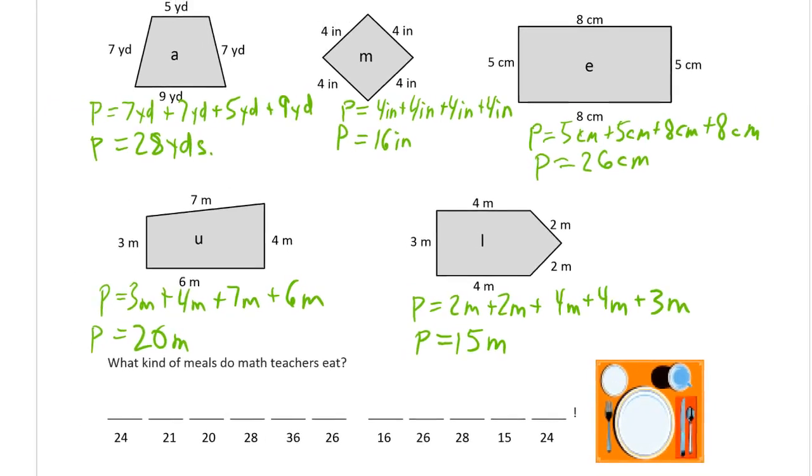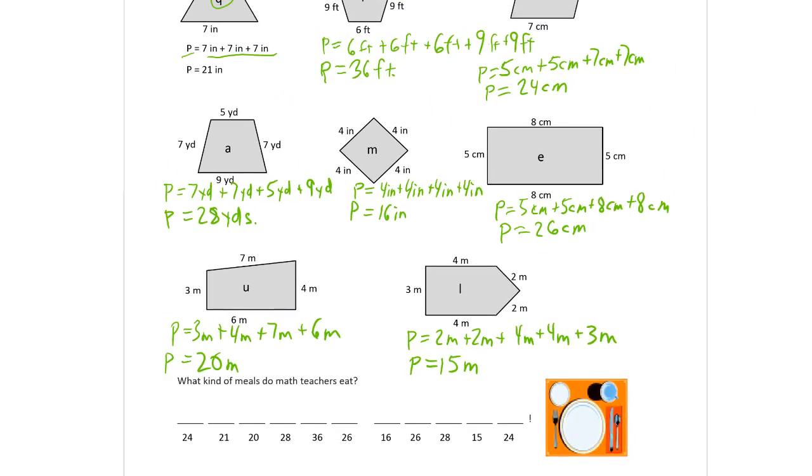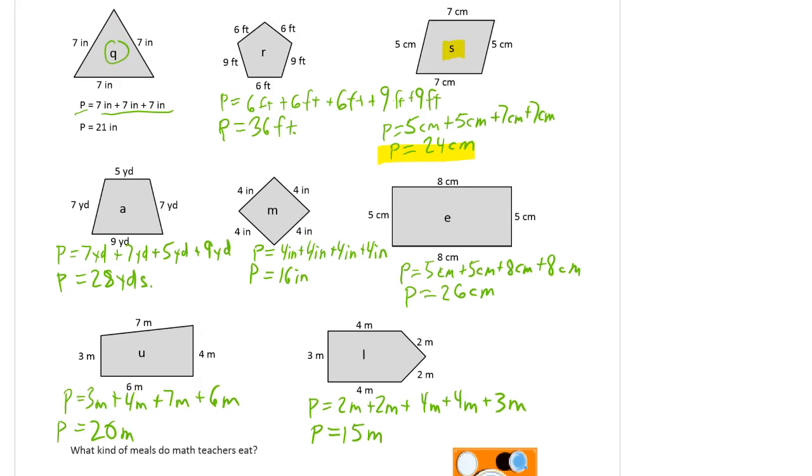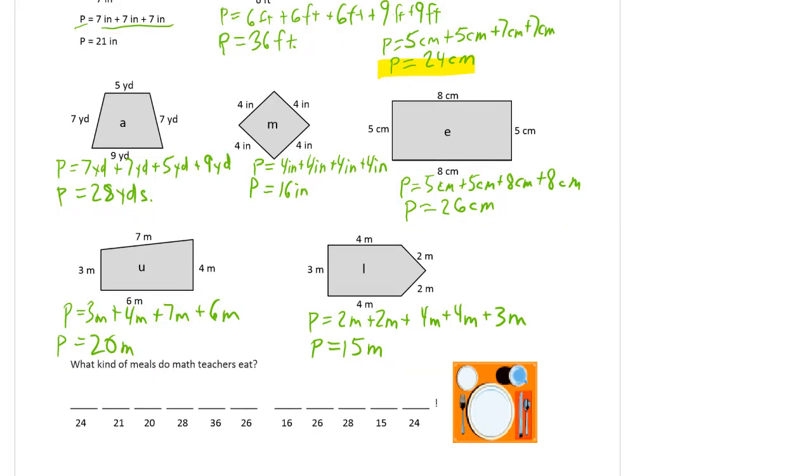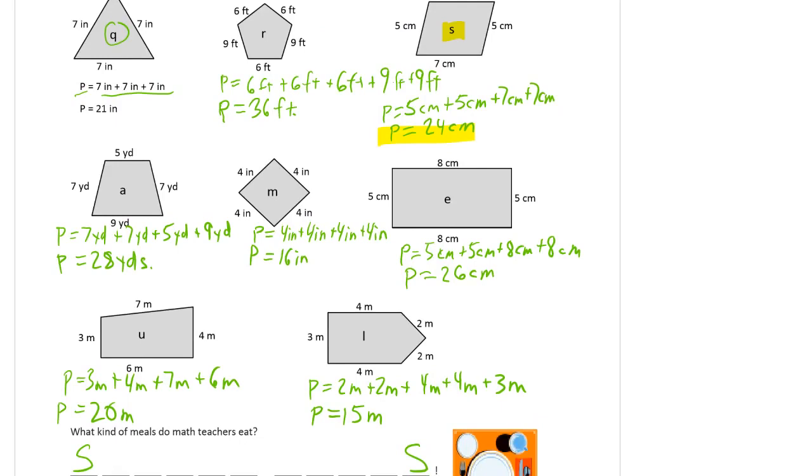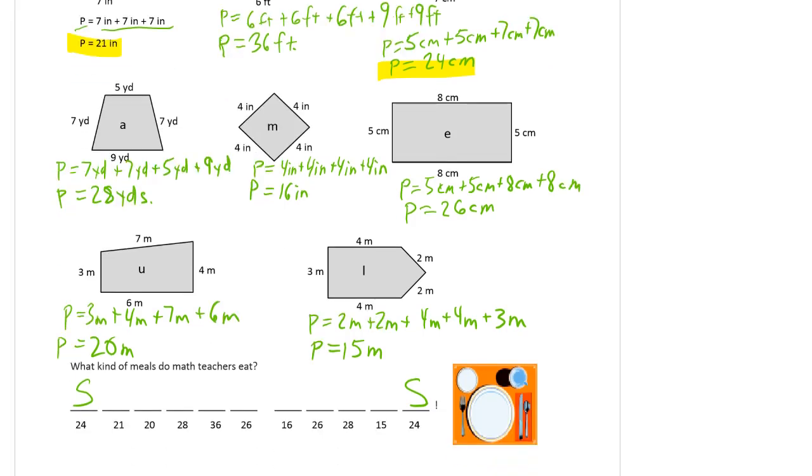Now, what kind of meals do math teachers eat? We'll go back here and look at all the codes. 24 is here. So that's letter S. Let's see if there are any other 24s. There's one at the end. And then we need a 21. 21 is here. So that's letter Q. I think they're going to be square meals.